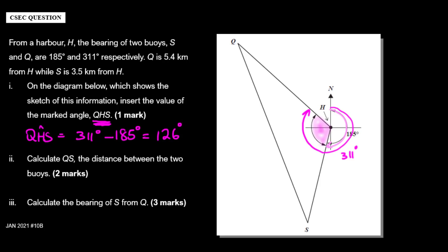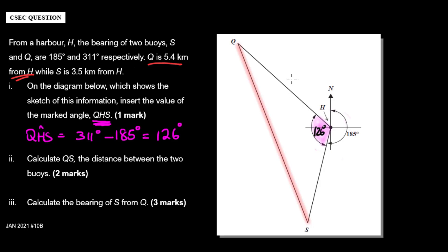Next we want to find side QS. Let's first identify that — it's the side right here. This is QS. Now what do we already know? From the question, Q is 5.4 kilometers from H, so let me put that on the diagram. And S is 3.5 kilometers from H, so this would be 3.5 kilometers.